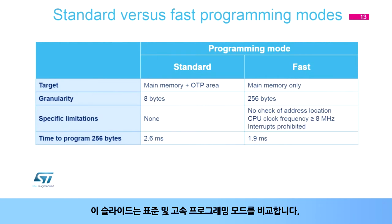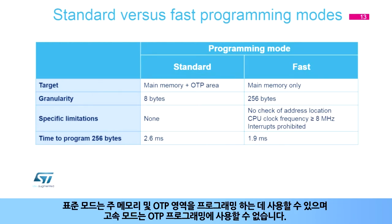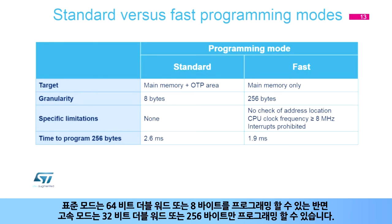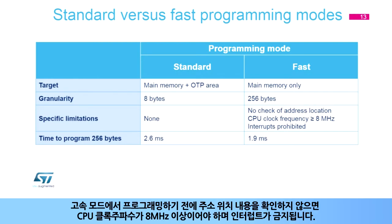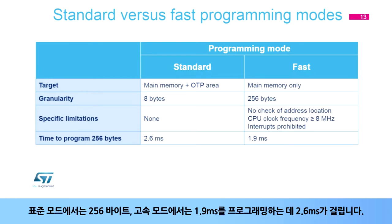This slide compares standard and fast programming modes. Standard mode can be used to program the main memory and OTP areas, while fast mode cannot be used for OTP programming. Standard mode allows programming 64-bit double words or 8 bytes, whereas fast mode only allows programming 32 double words or 256 bytes. In fast mode, the address location content is not checked before programming. The CPU clock frequency must be greater than 8 MHz and interrupts are prohibited. It takes 2.6 milliseconds to program 256 bytes in standard mode and 1.9 milliseconds in fast mode.